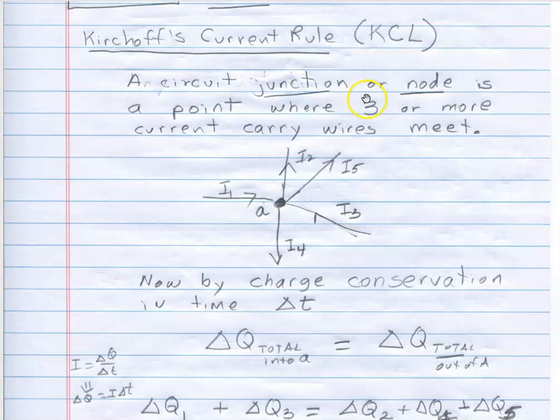But a junction or a node is a point in the circuit where three or more current carrying wires meet. Here is the, and generally we label those with a letter, either a small A or a capital A, B, C, etc.